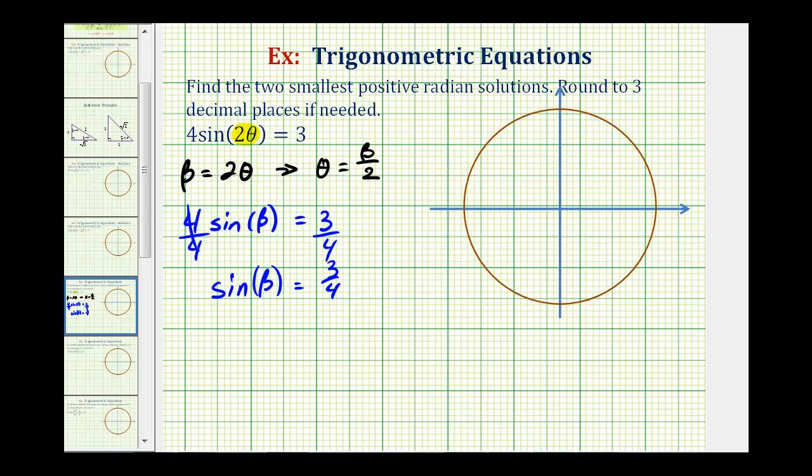Before we do that, notice how the sine function value is positive. Since sine theta is equal to y divided by r, this is telling us that the y coordinate must be positive in order for the sine function value to be positive, which means the angles that satisfy this equation must be in the first quadrant or second quadrant where y is positive.